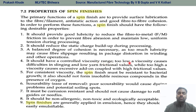If the viscosity is too low, that will cause difficulty in slinging and low yarn frictional value. While if the viscosity is too high, it will cause excessive add-on coupled with high frictional values.